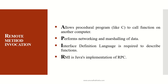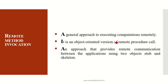RMI allows procedural programs like C to call functions on another program. It performs networking and marshalling of data. Marshalling of data means transferring the data structure used in remote procedure calls from one address space to another. This helps transfer data structures when communicating on a remote network. An interface definition language (IDL) is required to describe functions, as without it we cannot communicate with a remote network.